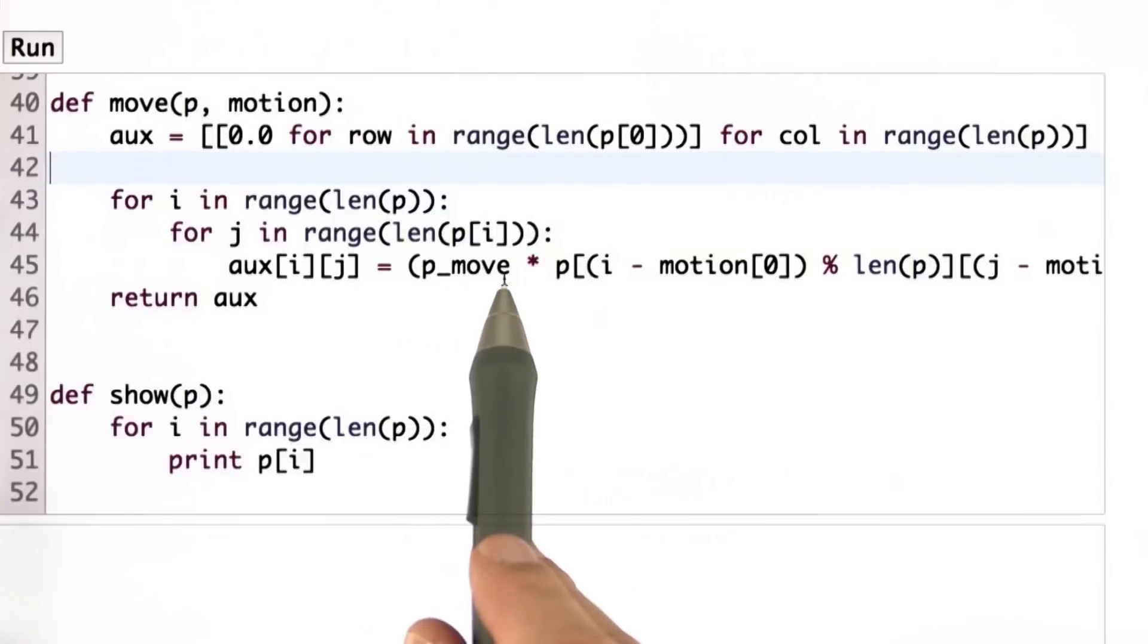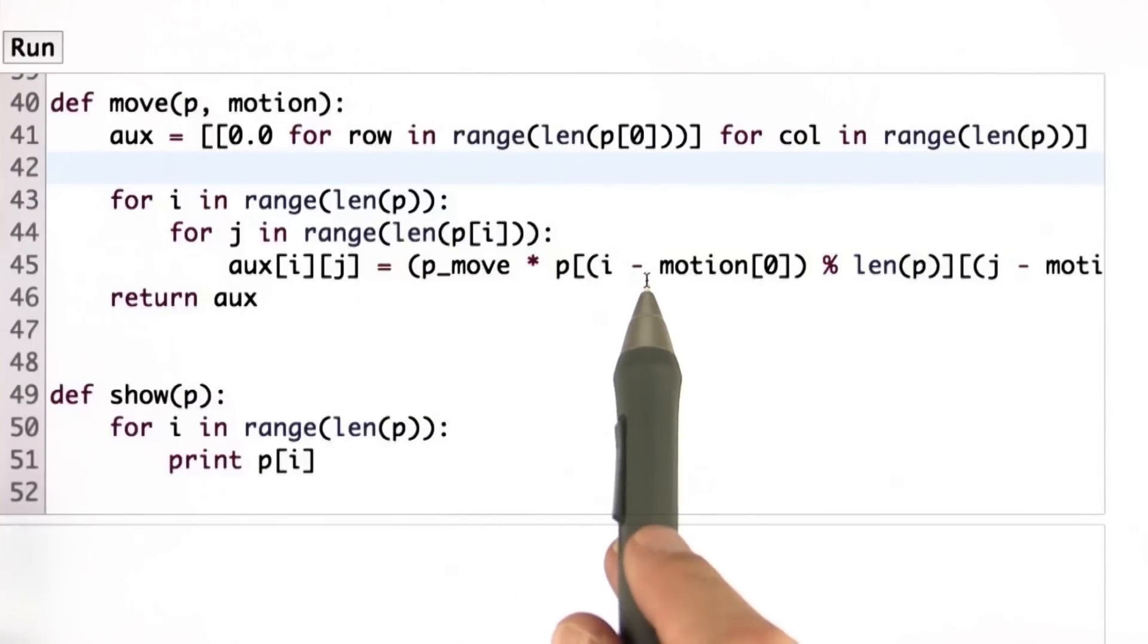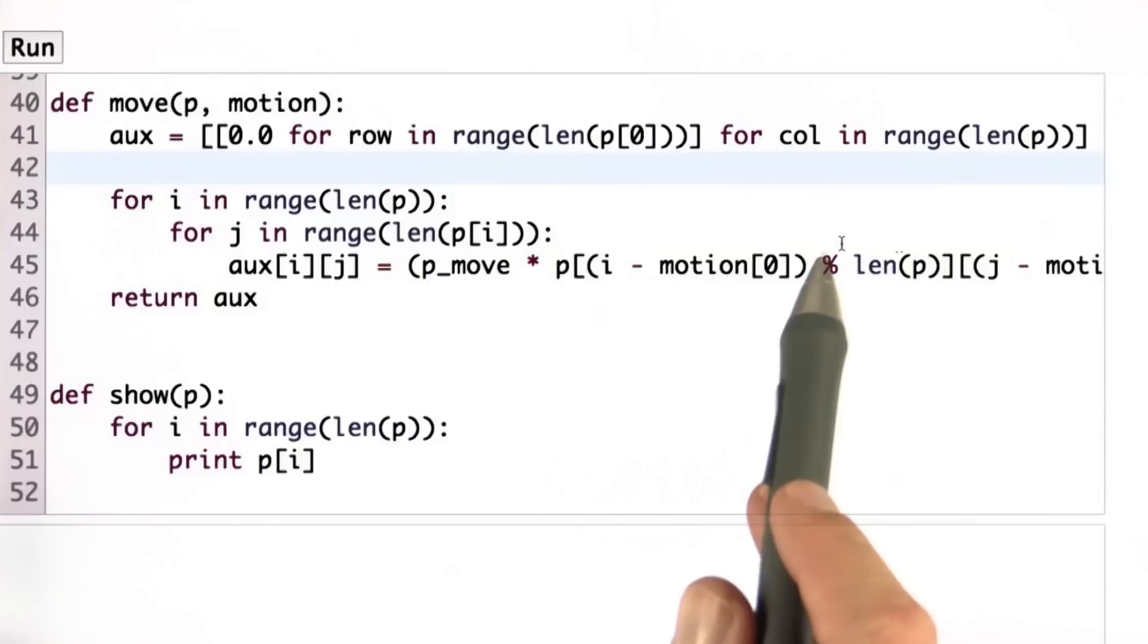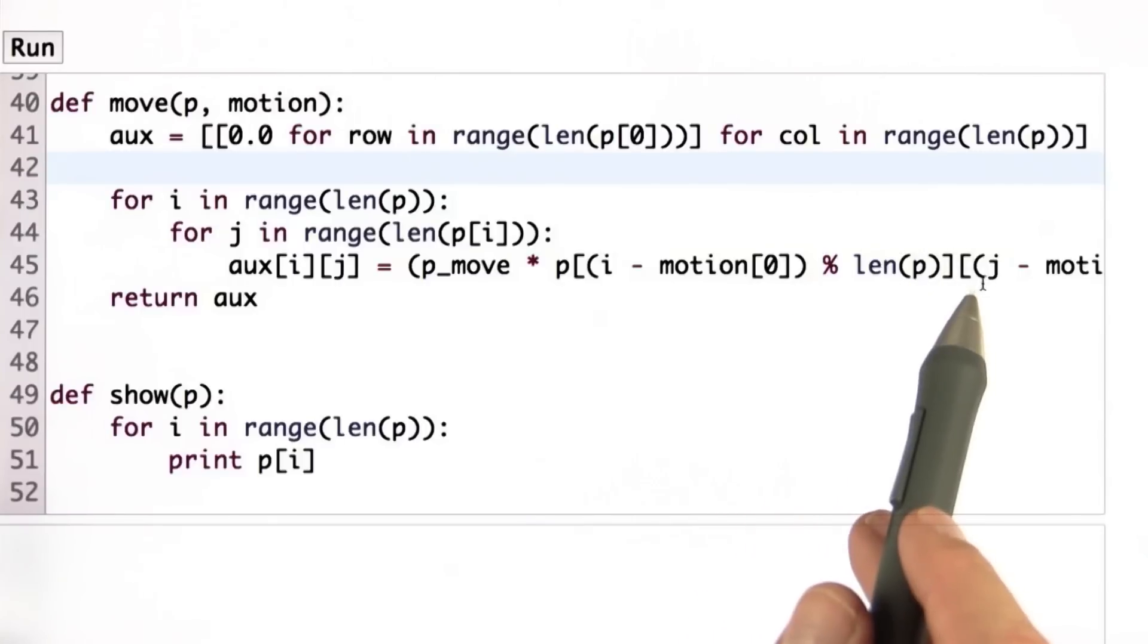With probability p_move, it actually moved, in which case its prior coordinate would have been i minus the motion command. That's because we go backwards in time. And this is the truncation indicating we have a circling array. And we do the same with j.